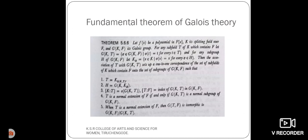Next, let's see the Fundamental Theorem of Galois Theory statement. Let f(x) be the polynomial in F[x], K is its splitting field over the field F, and the group of automorphisms G(K,F) is the Galois group.